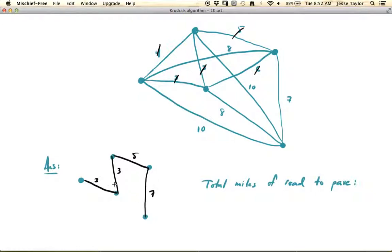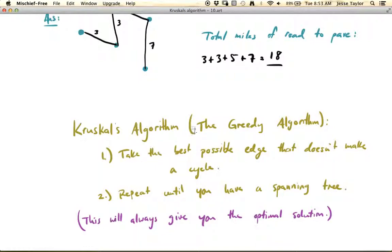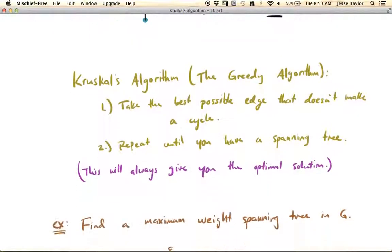And so now we have a spanning tree of the original graph, and this is guaranteed to be the smallest possible one, or at least one of the smallest possible ones. So the total miles that we needed to pave were three plus three plus five plus seven, or a grand total of 18 miles. This is just to give you some context for the problem, but now let's look at Kruskal's algorithm. This is also called the greedy algorithm, because essentially you're just saying, what's the best one I can have right now, and being greedy about your choices, but that ends up giving you the best option. So take the best possible edge that doesn't make a cycle. Best meaning the smallest edge weight if you're looking for a minimum spanning tree, or the maximum edge weight if you're looking for a maximum spanning tree. Just keep doing this until you have a spanning tree. And that's always going to give you the optimal solution. So let's look at one more example.